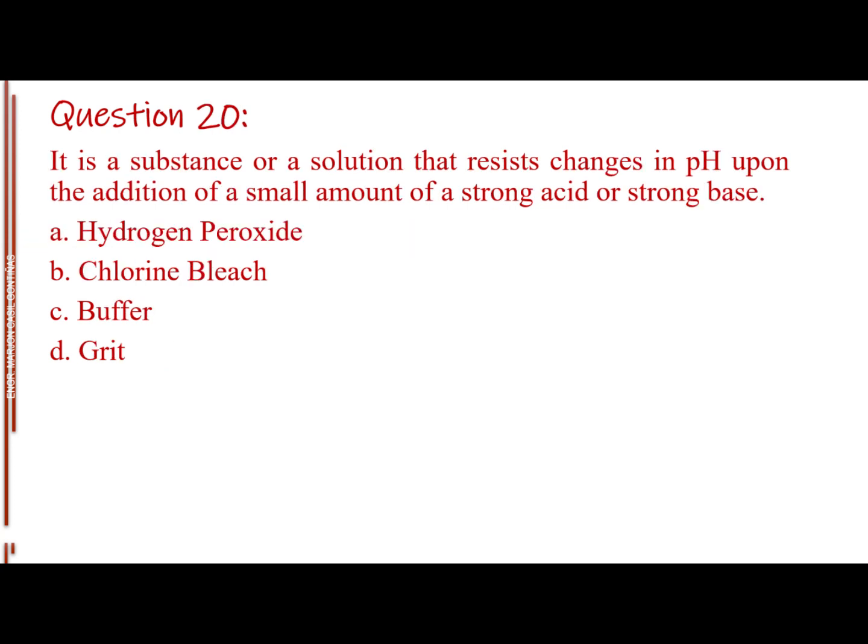Question number 20. It is a substance or a solution that resists changes in pH upon the addition of a small amount of a strong acid or strong base. Letter A, hydrogen peroxide. Letter B, chlorine bleach. Letter C, buffer. Letter D, grit. The answer is Letter C, buffer.